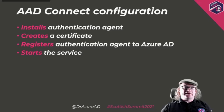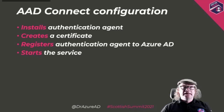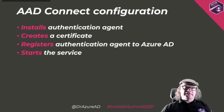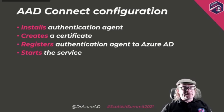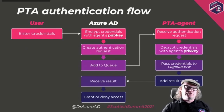When you configure PTA, the authentication agent is installed — it can be installed in any domain-joined server, but when you first configure it using Azure AD Connect, the first agent is installed on the Azure AD Connect server. After installation, Azure AD Connect creates a certificate with a public and private key. That certificate represents the agent, and Azure AD Connect registers that agent to Azure AD, sending the public key to the cloud so it can encrypt authentication requests.